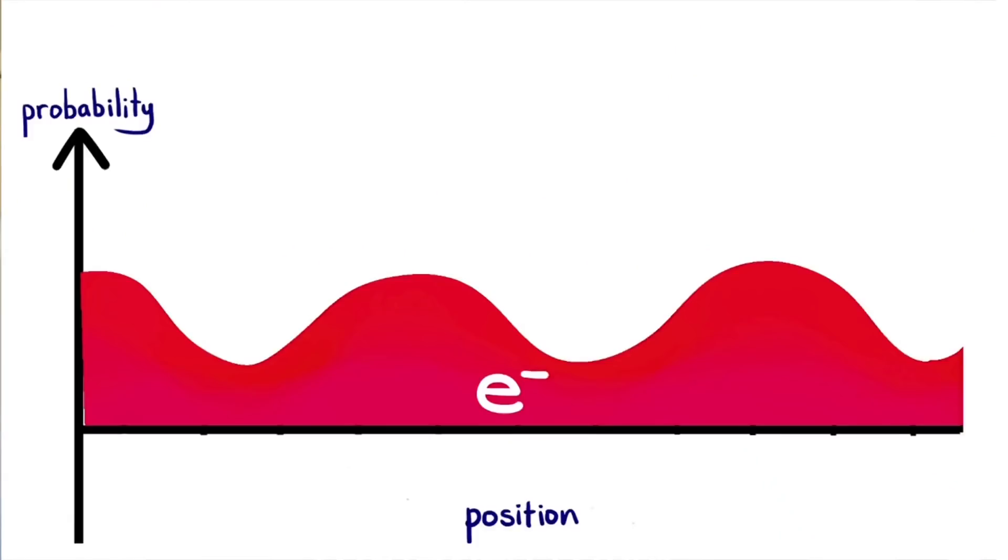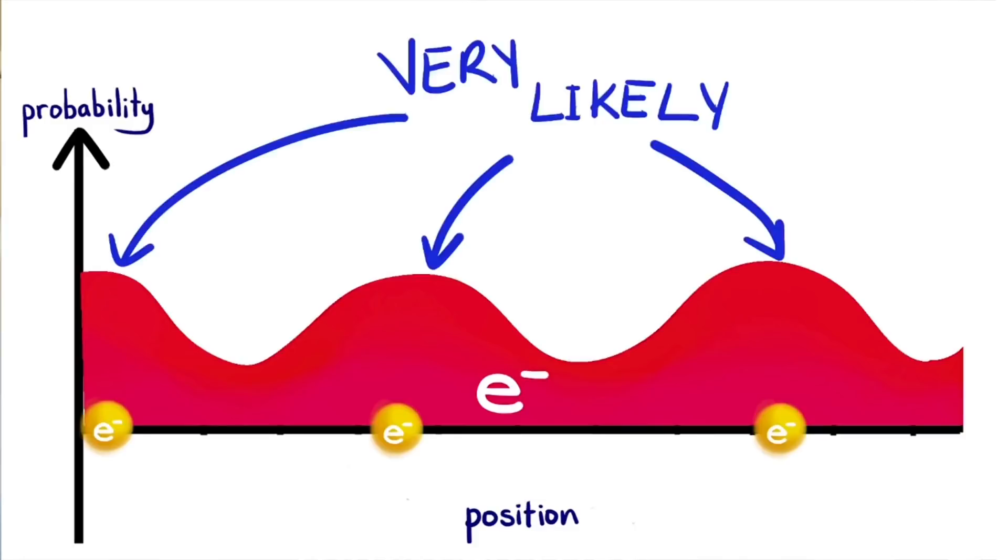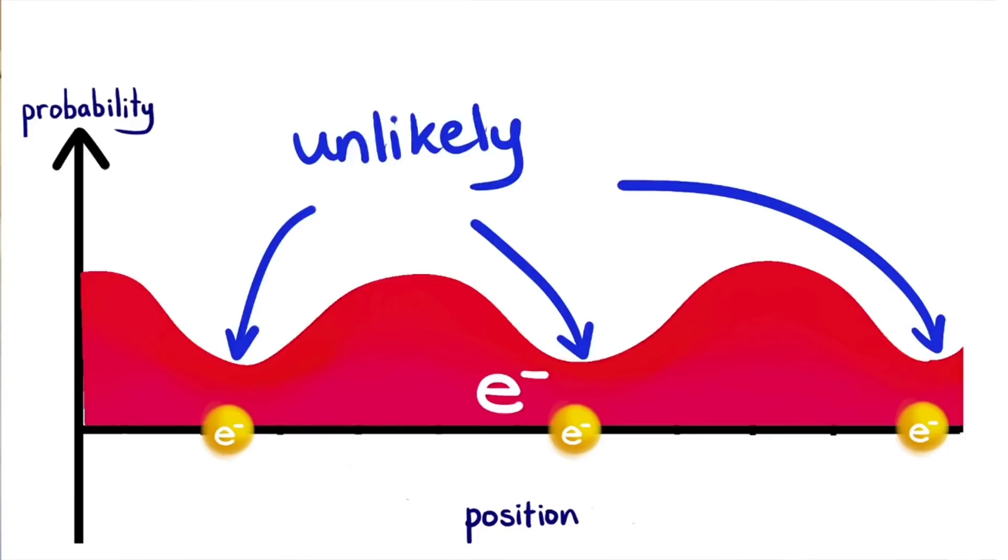This wave tells us the odds of finding a particle at that location. Say this is our electron's probability wave. The peaks of the wave are where we're most likely to find the electron, and in the valleys, it's less likely we'll find it there.